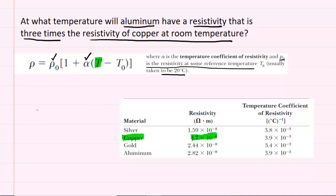Now this question wants aluminum to have a resistivity that is three times the resistivity of copper at room temperature. So, in other words, the resistivity for aluminum is going to equal three times the resistivity of copper. So we're going to take this value for copper, and we're basically going to multiply it by three.